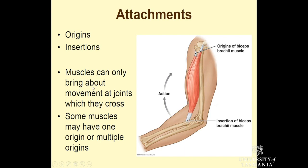Muscles can only bring about movements of joints which they cross. Because the biceps connects to the scapula via the acromion process, it actually crosses two joints — the shoulder joint and the elbow joint — so it can function across both. Some muscles may have one origin or multiple origins. Biceps brachii has two heads, while triceps brachii has three heads with three different origins but one broad insertion point into the ulna.